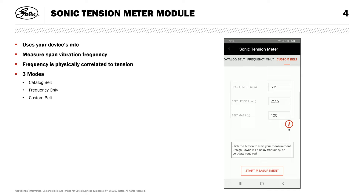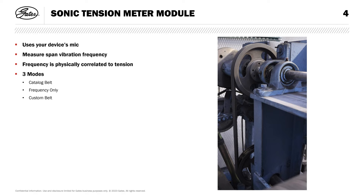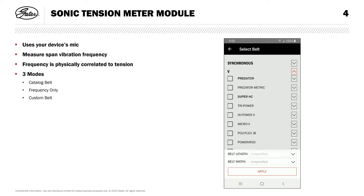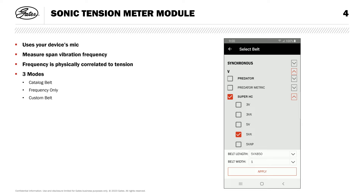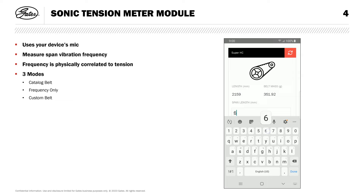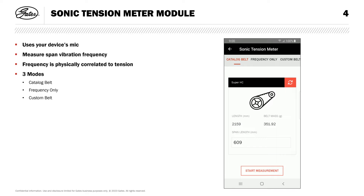Now that we've covered the modes, let's check tension on an example belt. Here's the drive I'm going to be working with. I have a report for this drive, and I know my belt details, so I'll use the catalog belt mode. I'll select my belt product, the specific section, and I'll enter my length and belt width. Then I'll hit apply. Next, I'll enter the span length, which I'll pull from my report. You could get this from a DF Pro report, DIQ report, or measure it manually.